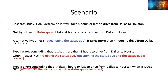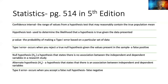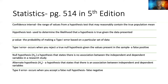How they test you on this is they will give you a scenario and ask you to identify what the type one error would be, or what the null hypothesis would be based on the scenario. You also want to be familiar with the symbols used. For the null hypothesis, there's a specific symbol, and there's another symbol used as well. You want to know those letters and symbols in case they test you on that.